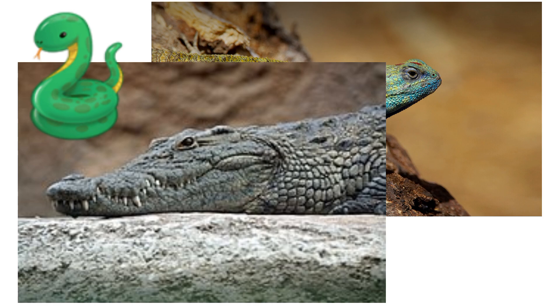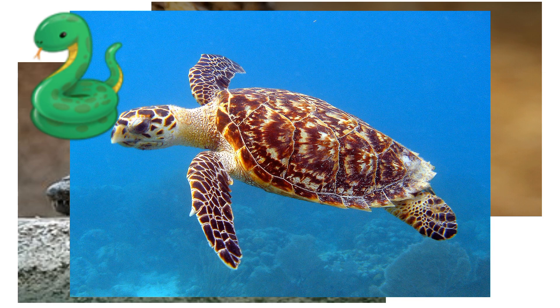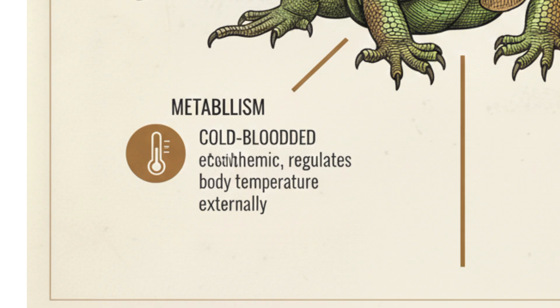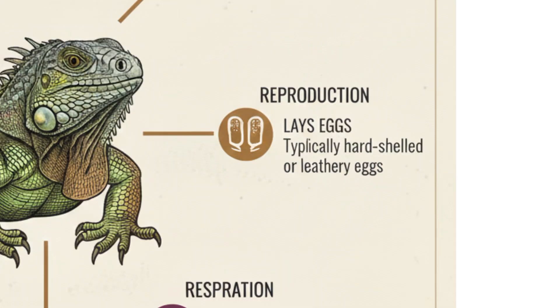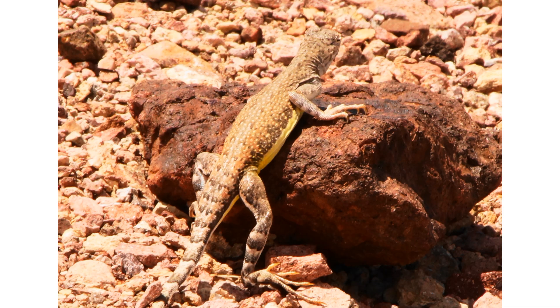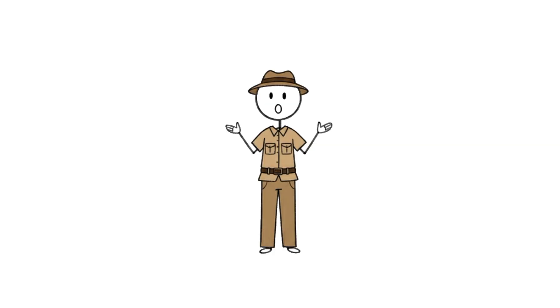Reptiles — snakes, lizards, crocodiles, turtles — the ancient squad that looks like they played with dinosaurs. How do you classify a reptile? If an animal has scales, cold-blooded metabolism, breathes air, and lays leathery eggs — reptile. They warm themselves in the sun because they don't have internal heaters. Crocodiles will lurk underwater for an hour straight like they're waiting for you to forget they exist.